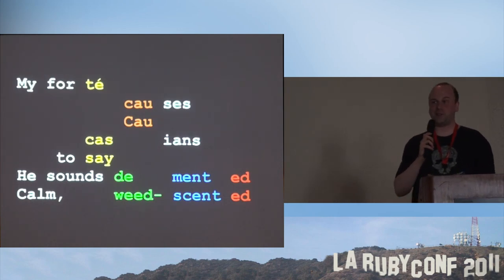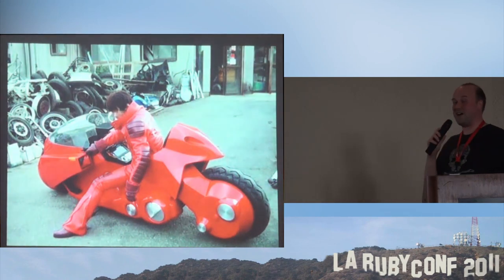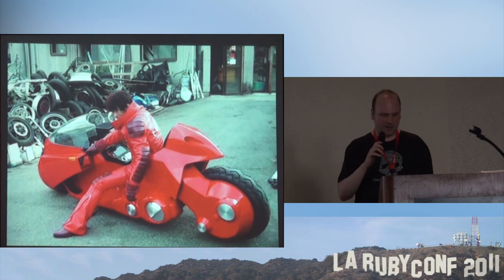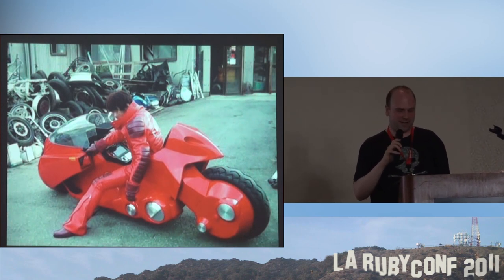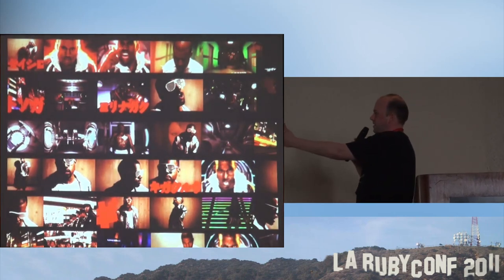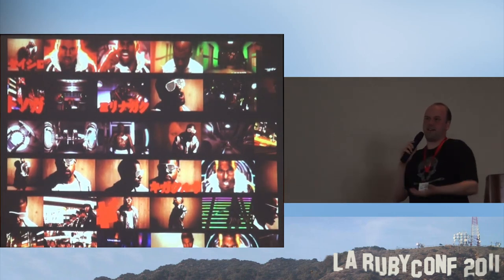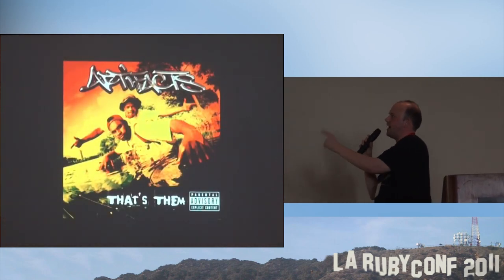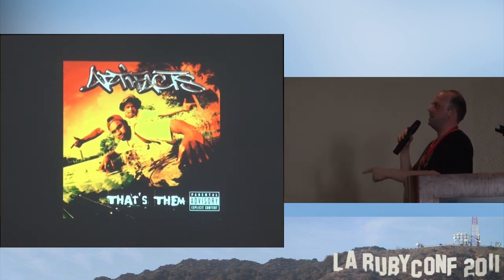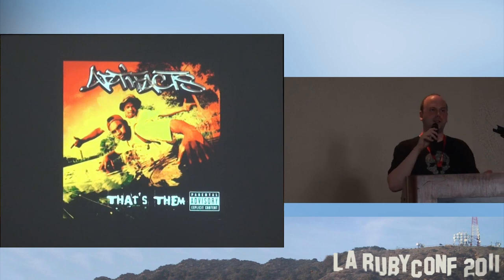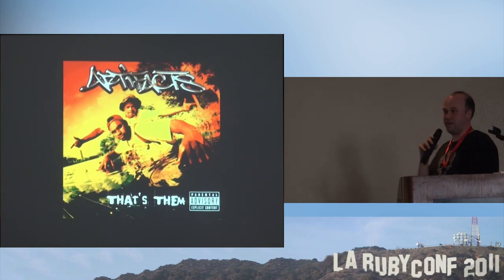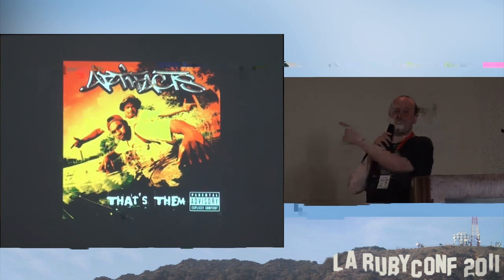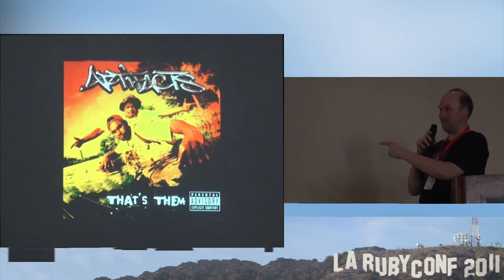This will become relevant to code in the weirdest way. Now obviously the next thing to talk about is Akira. Now if you're wondering what the link is between hip-hop and Akira — actually what I want to talk about is a mid-to-late 90s album from the East Coast rap scene: 'That's Them' by The Artifacts, which also includes an Akira reference. I'm real happy for Kanye and I'm gonna let him finish, but this album contains the best hip-hop Akira reference of all time.